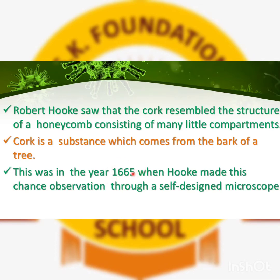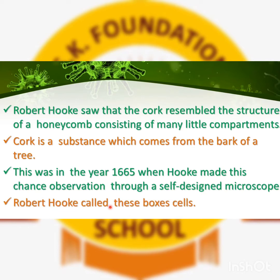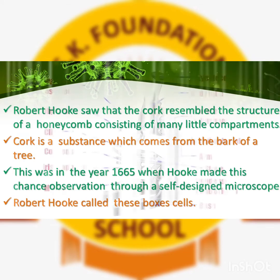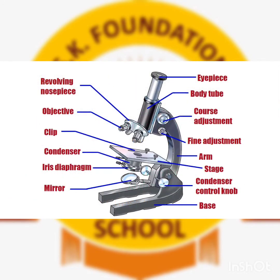This discovery was made by Robert Hooke in the year 1665. For this discovery he used a microscope — not an automatic one, but a self-designed microscope by Robert Hooke himself. Robert Hooke saw the cell with the help of his own designed microscope, and he called these compartments 'cells.'